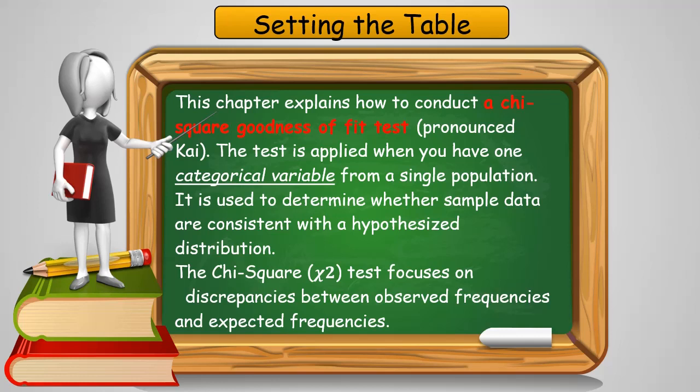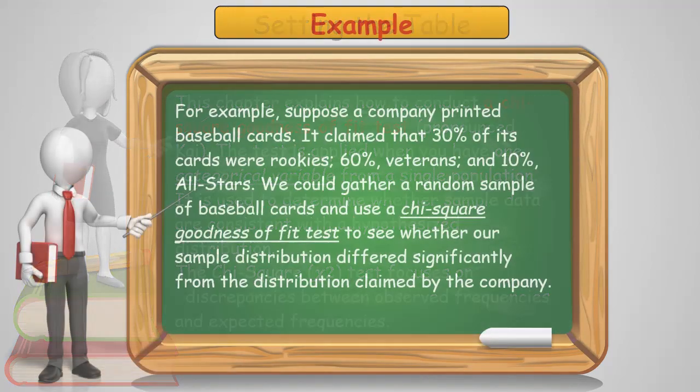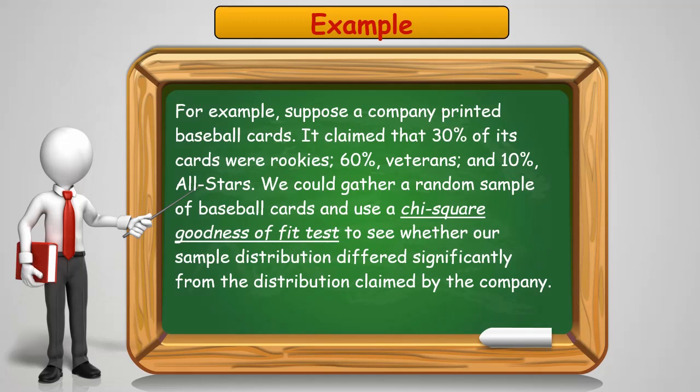The chi-square test focuses on discrepancies between the observed frequencies and the expected frequencies. I'm going to use as an example, suppose a company printed baseball cards and it claimed that 30% of its cards were rookies, 60% veterans, and 10% all-stars. I'd like to gather a random sample of baseball cards and use the chi-square goodness-of-fit test to see whether our sample distribution differed significantly from the company distribution claims that they have made.